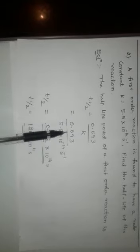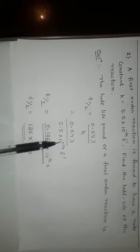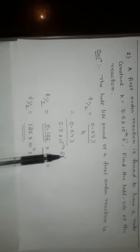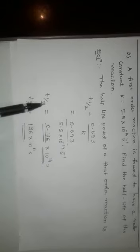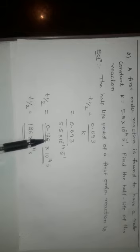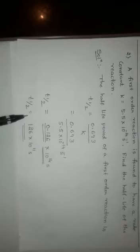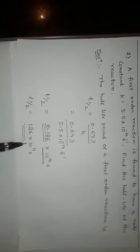0.693 divided by 5.5 into 10 to the power of minus 14 per second. Then, t half is equal to 0.126 into 10 to the power of 14 per second, or t half is equal to 126 into 10 to the power of 11 per second. This is the correct answer, students.